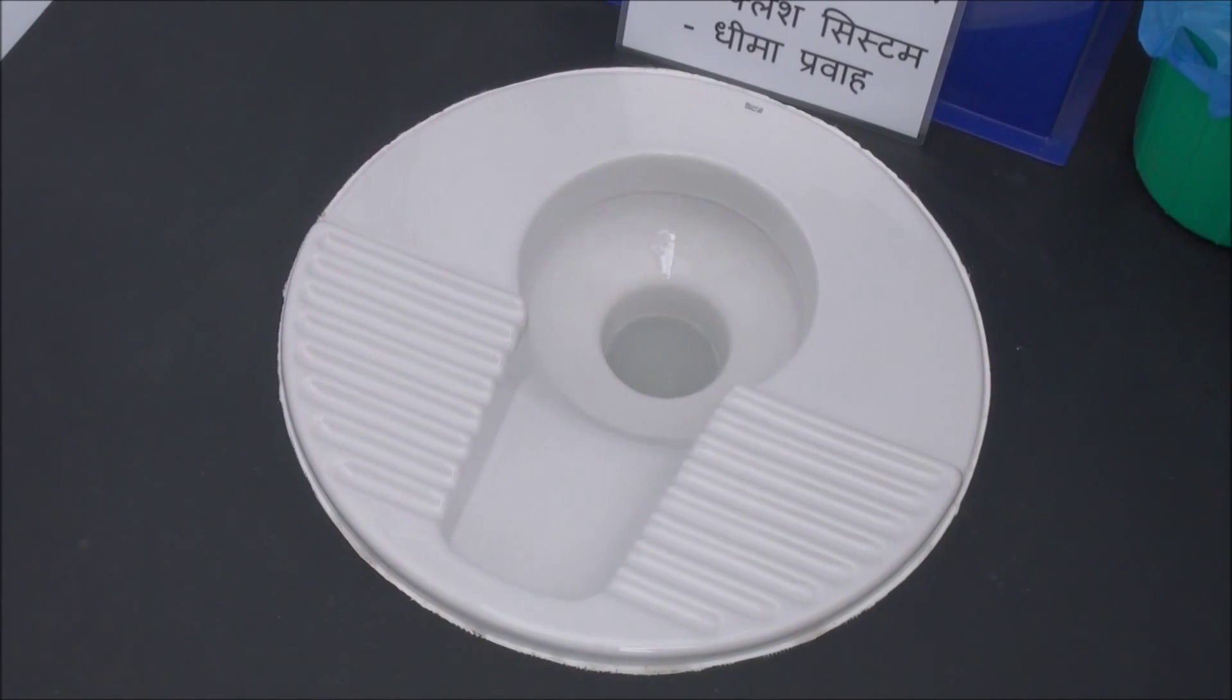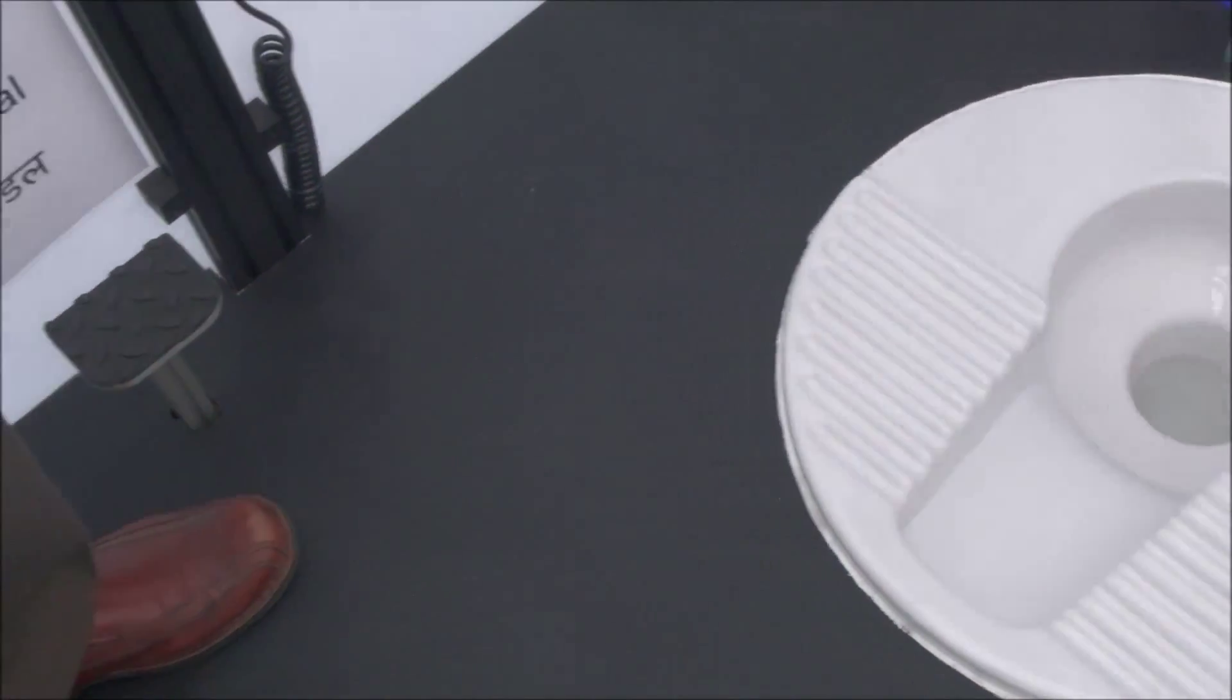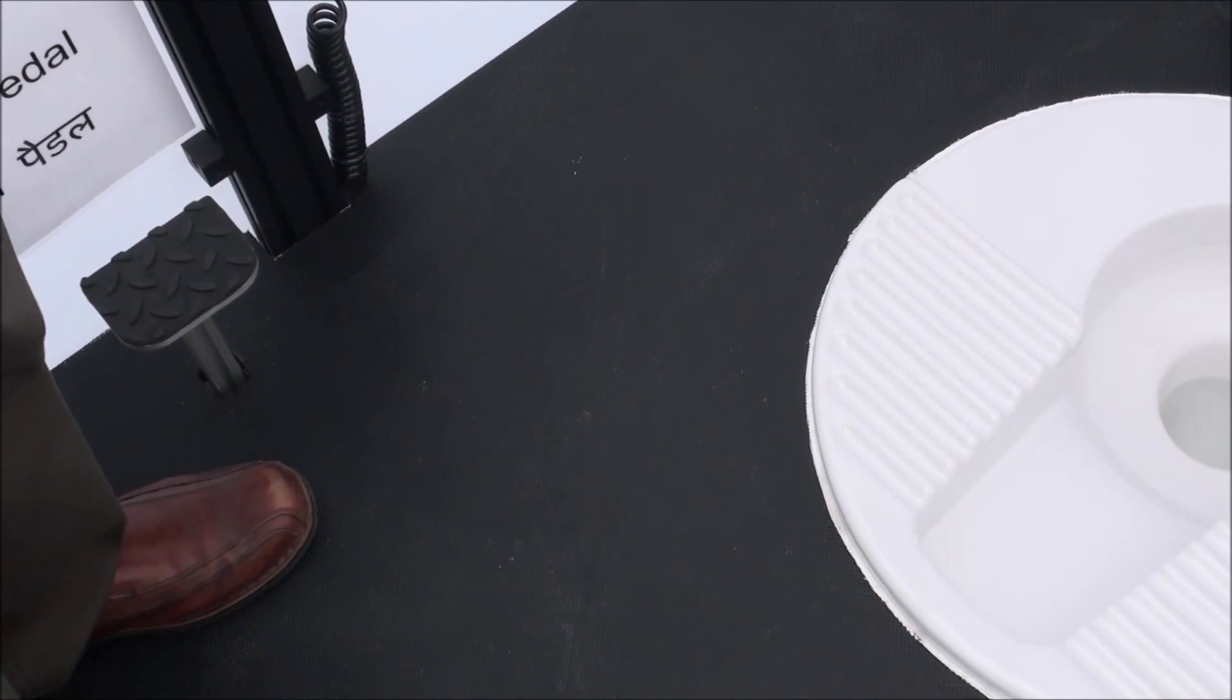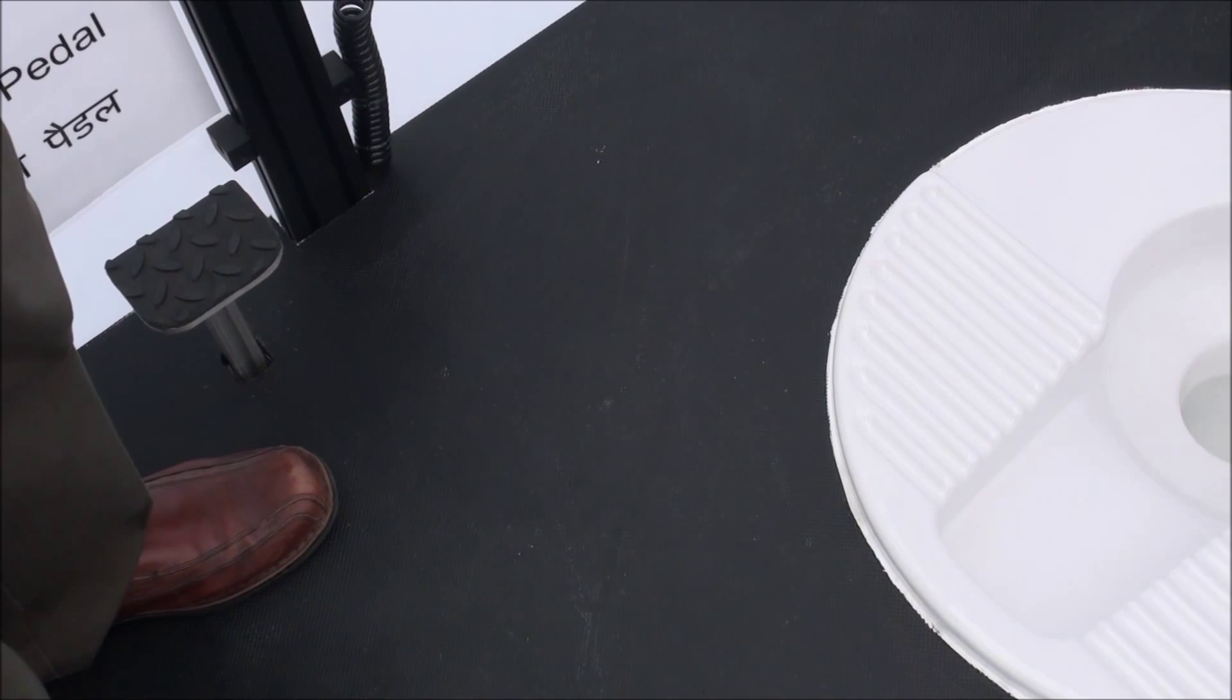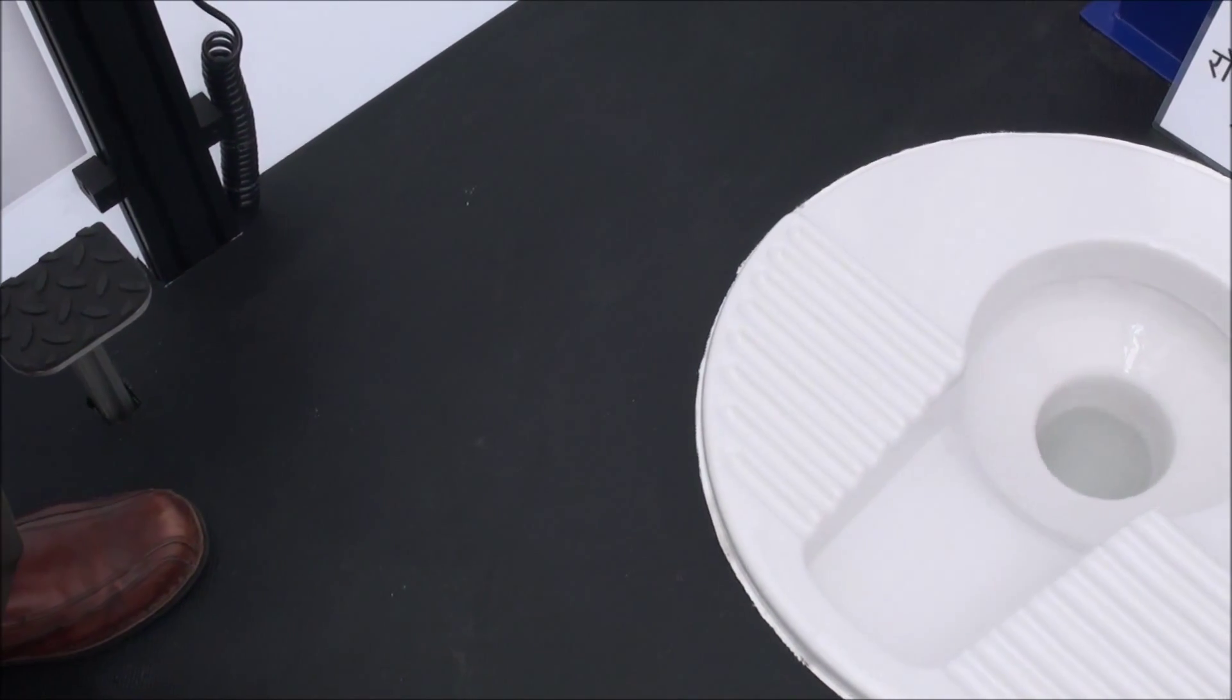The linear actuation, the foot pedal, does two things. It obviously flushes the toilet, but it also indexes the auger up, so it moves the dry feces up through the drying auger and then into the combustion system, which I can show you next.